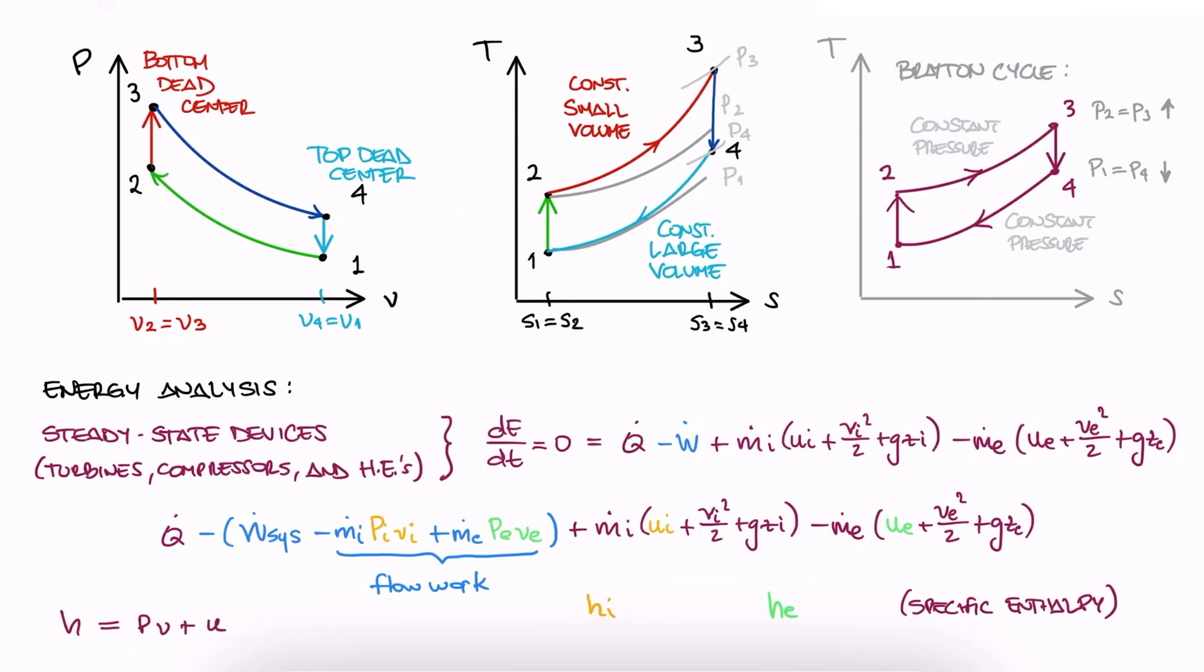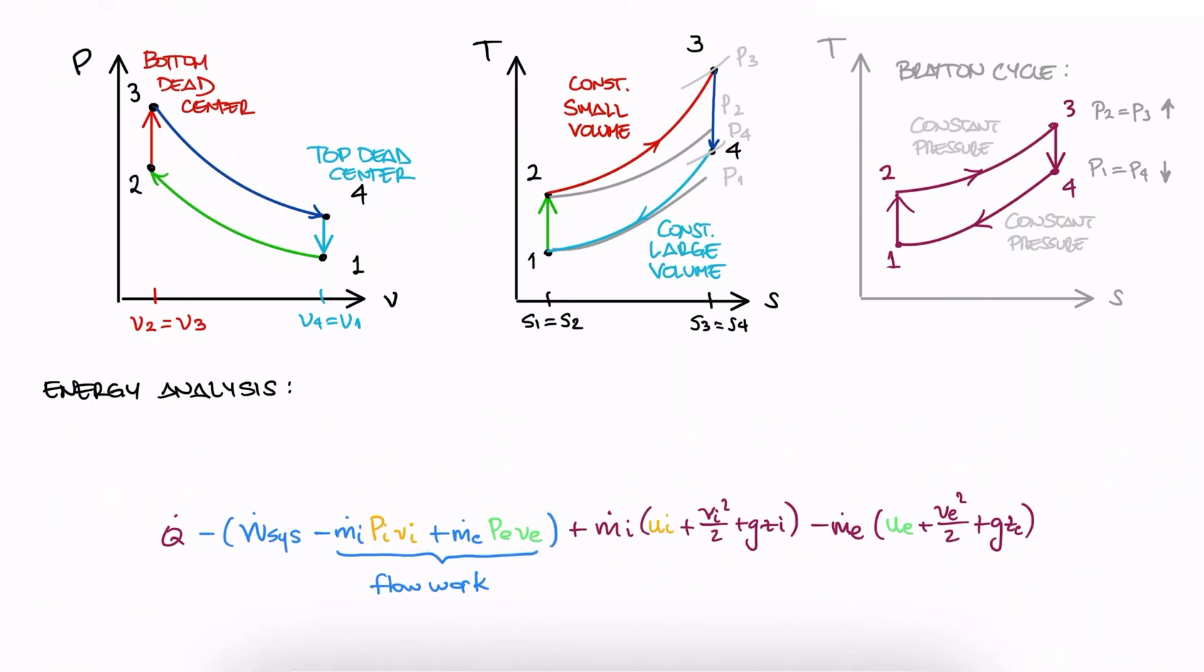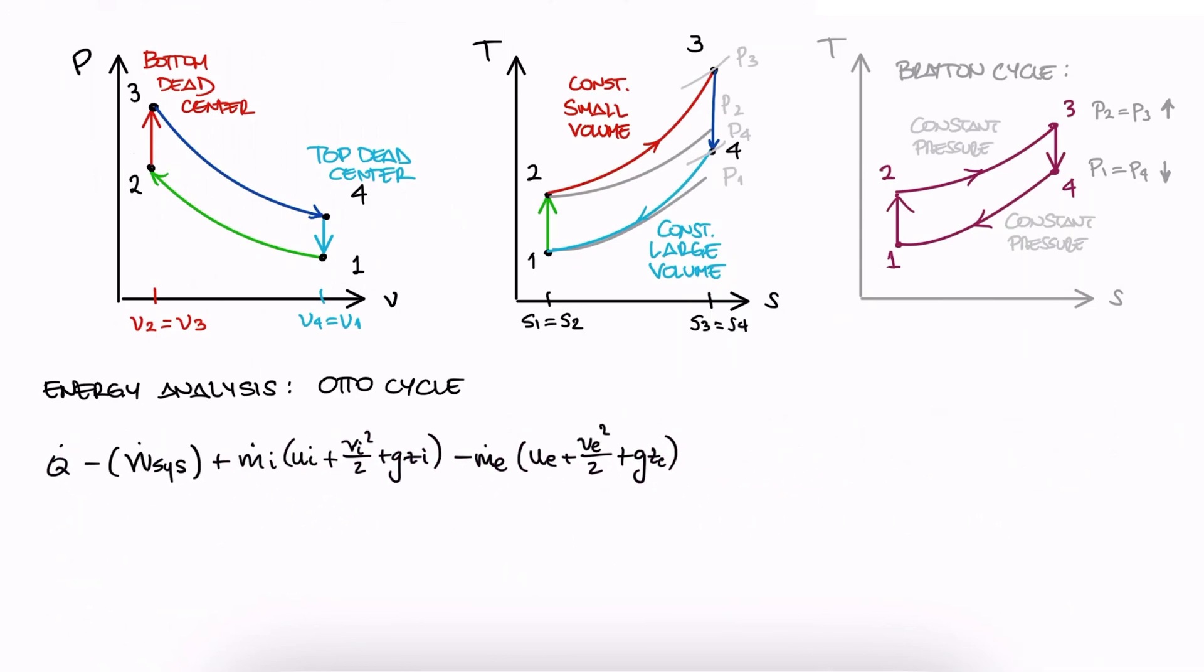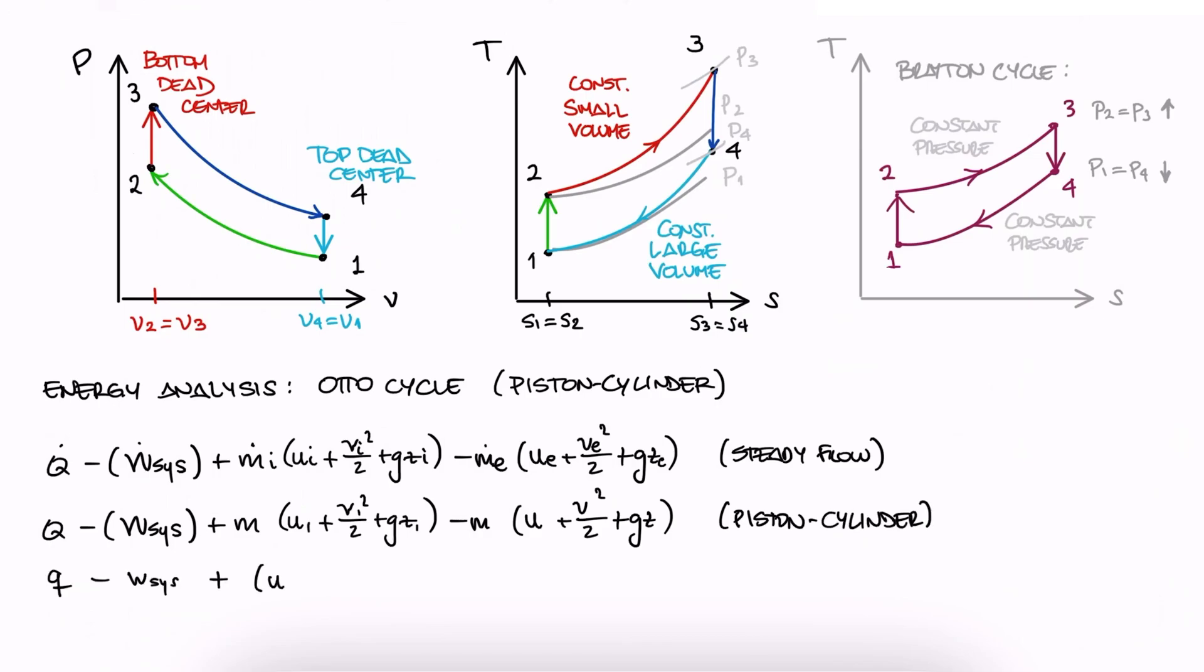But in the Otto cycle, we don't have that PV, or flow work term to make the working fluid pass through devices. The Otto cycle is just air inside a piston cylinder device. What this means, in a nutshell, is that the terms we'll find in the energy conservation equation are internal energy terms, not enthalpy.